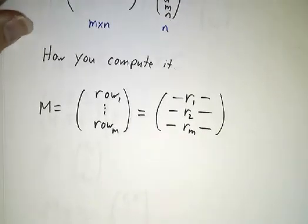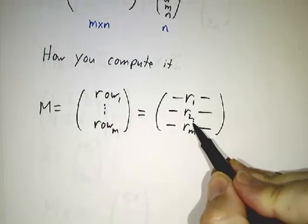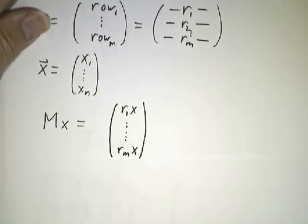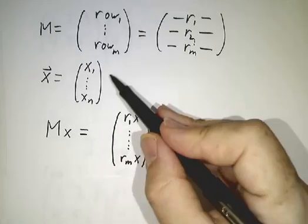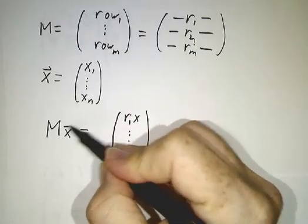So if we think of our matrix as being made of rows, let r1 be the first row, r2 the second row, all the way down to rm, then the way you're used to computing the product is to take each row times x and list them all down, and that is m times x.